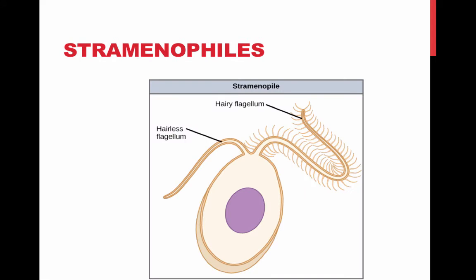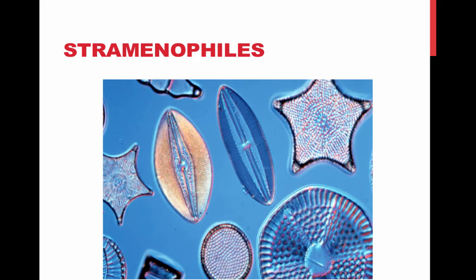Stramenopiles include several groups of heterotrophs as well as certain groups of algae. Most have a hairy flagellum paired with a smooth flagellum. Diatoms are unicellular algae with a unique two-part glass-like wall of hydrated silica. Diatoms are a major component of phytoplankton, and their fossilized walls compose much of the sediments known as diatomaceous earth, which is mined and used in abrasives and filters.